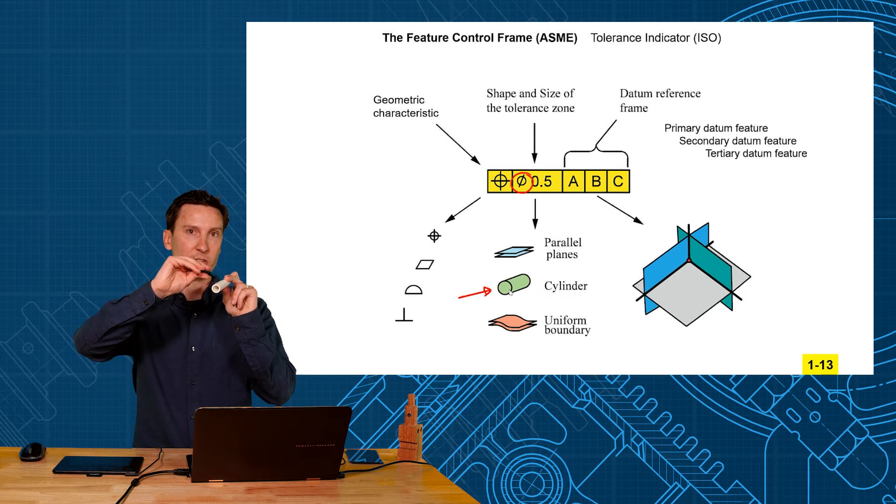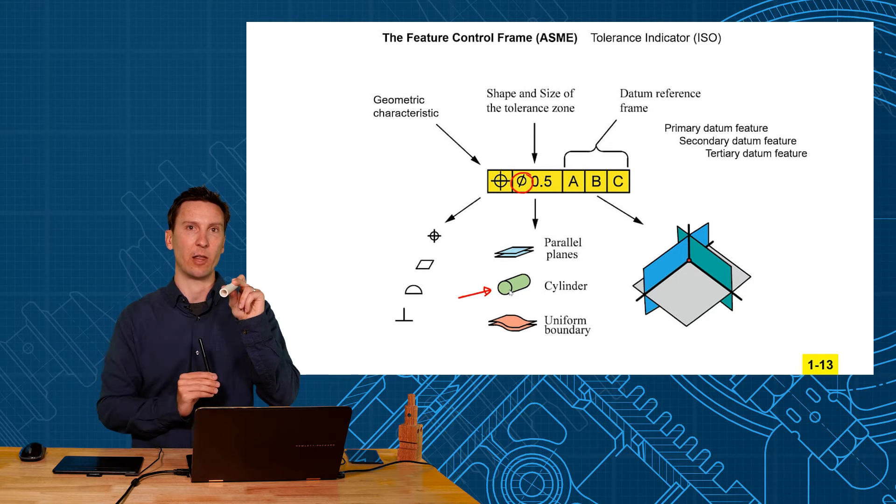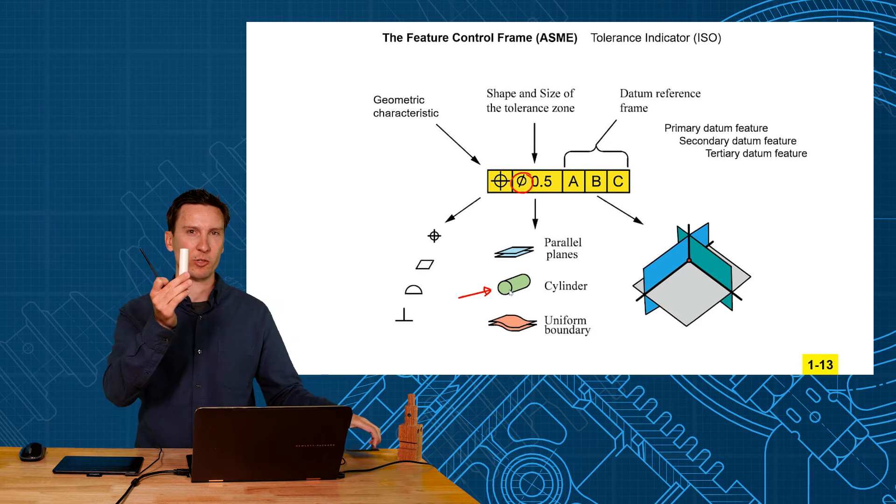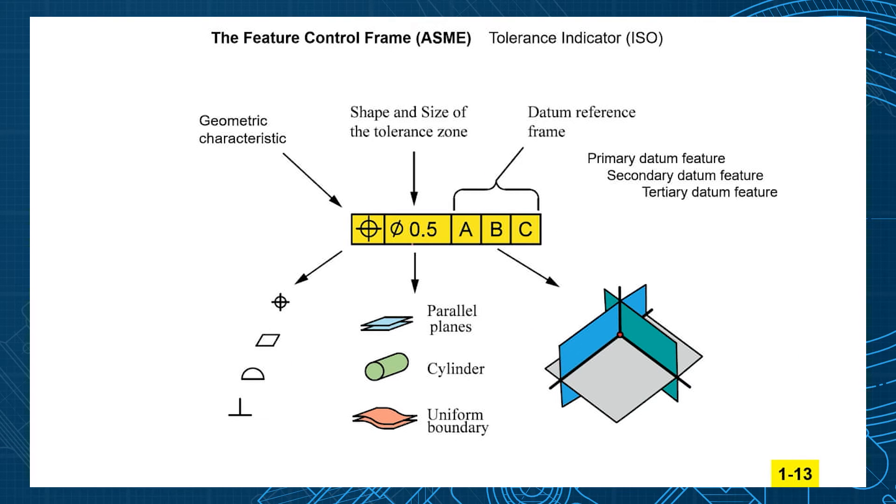That's for the axis of the hole or axis of the pin to lie within. So those are your two shapes - usually two parallel planes or a cylindrical zone. The 0.5, that's millimeters because of the leading zero, is the size of that zone - either the size of the cylinder or the distance between your two parallel planes.